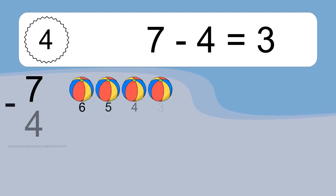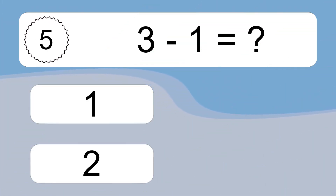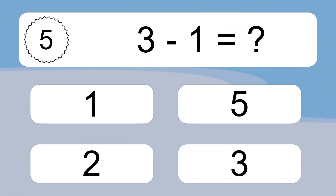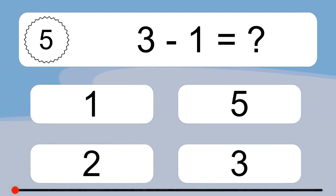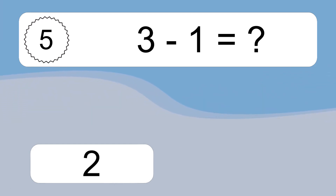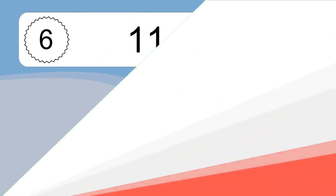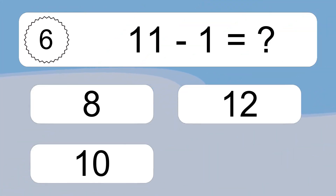7 minus 4 equals 3. Let's count it. 6, 5, 4, 3. 3 minus 1 equals what? 3 minus 1 equals 2. Let's count it. 2.